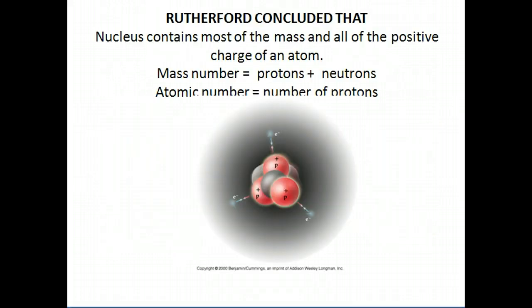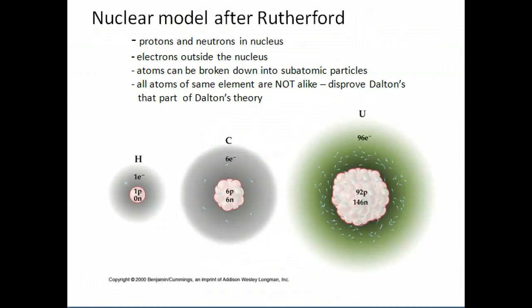After Rutherford's gold foil experiment, he concluded that the nucleus contains most of the mass and all the positive charge of an atom. We know that the mass number equals the number of protons and neutrons concentrated in the very dense nucleus, and that the atomic number is the number of protons. Once Rutherford made this discovery, Thompson's plum pudding model was no longer accurate. We now have a nuclear model where all the positive charge and most of the mass is in the dense center, and the electrons are somewhere beyond the nucleus.